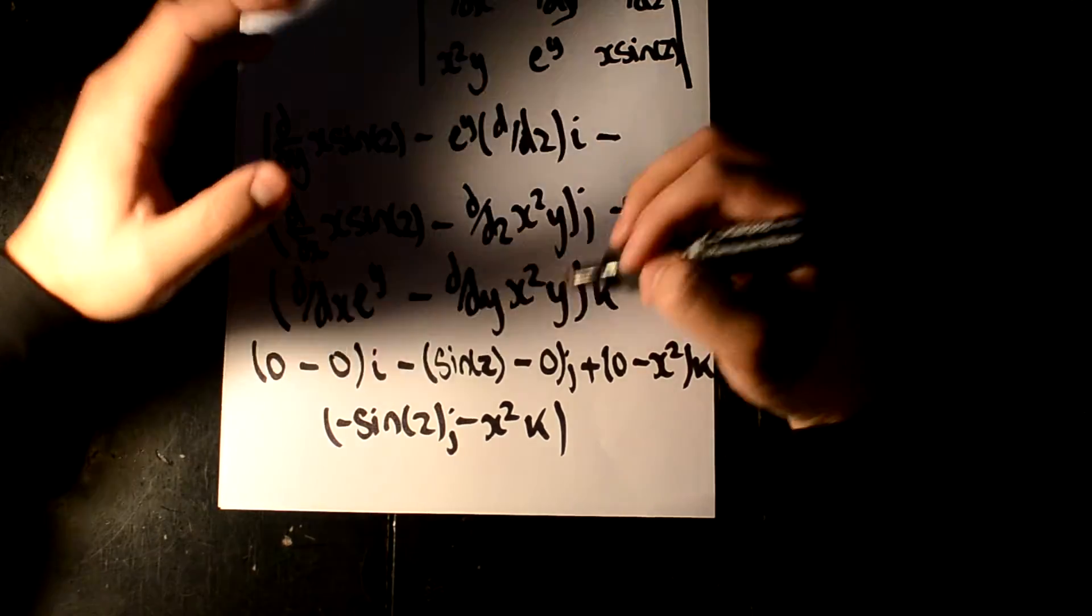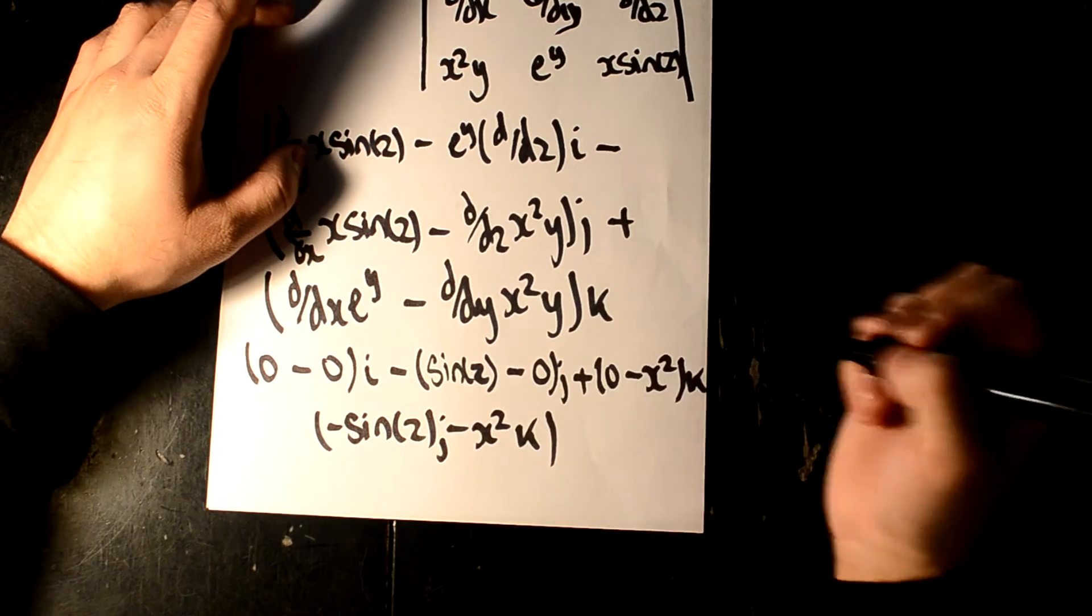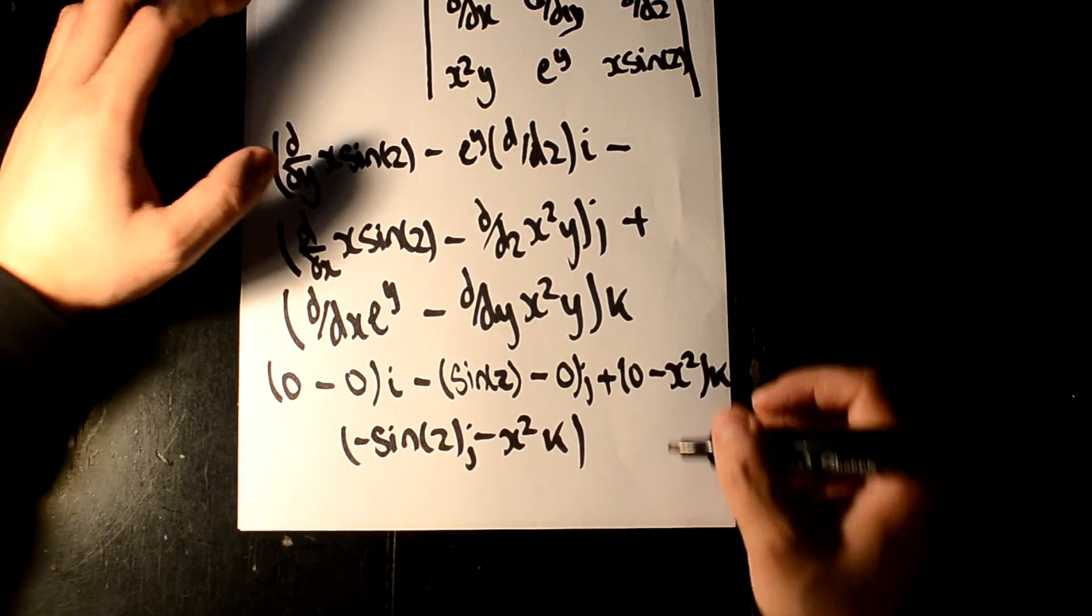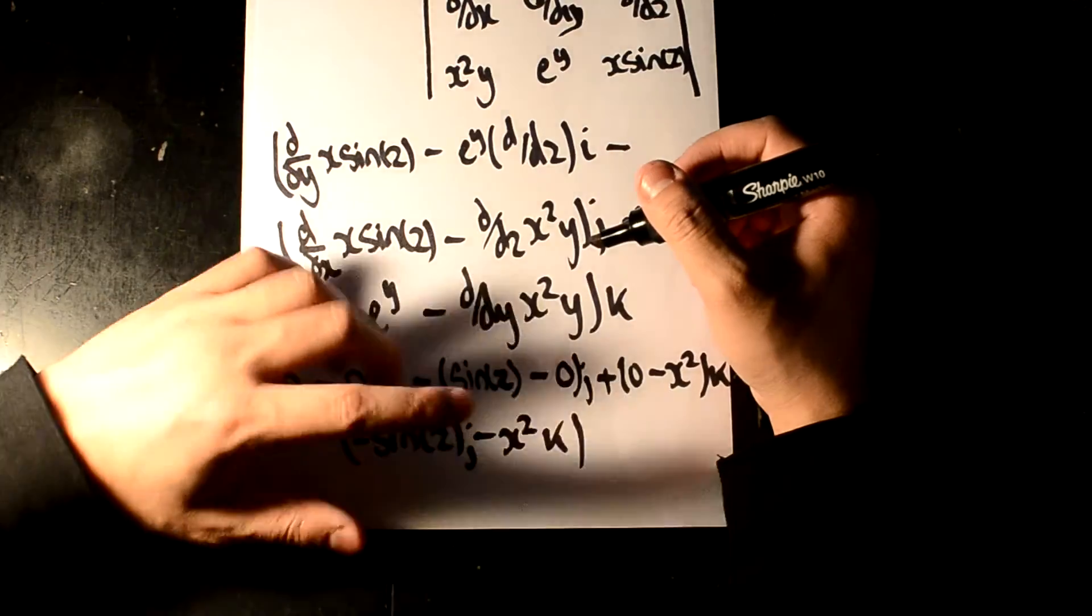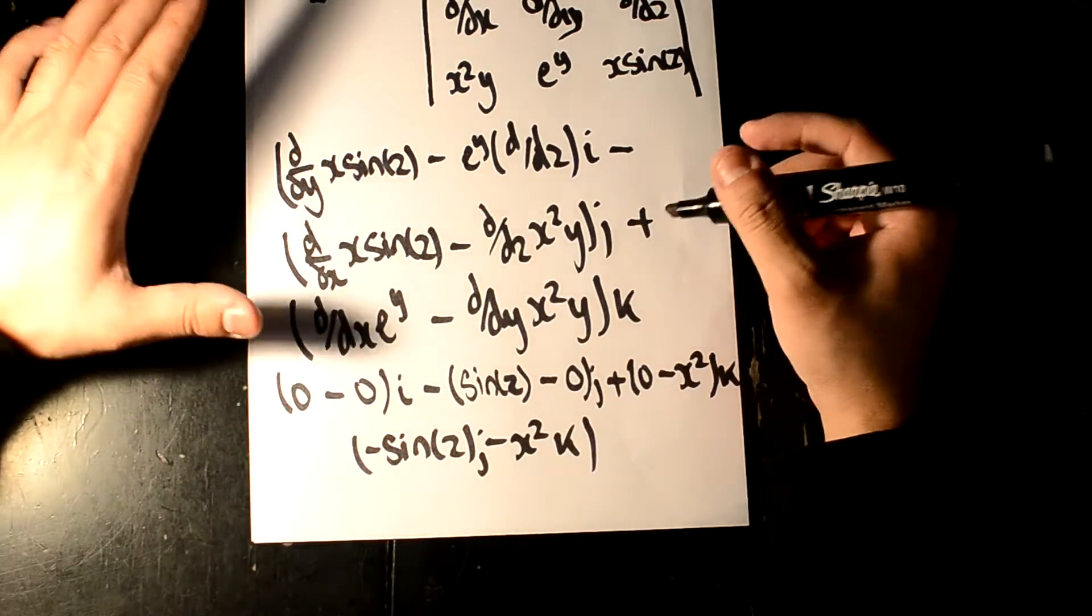As you can see, it remains with the j and k components. Sorry, not components, the vectors. That isn't removed.